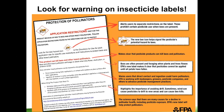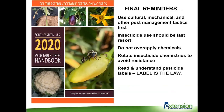Make sure you look for warning language on insecticide labels — for example, look for the pollinator protection mark on certain insecticides and follow those recommendations. Finally, make sure you're integrating cultural, mechanical, and other pest management tactics first before using chemicals. Use insecticides as a last resort, not the first resort. Think broadly about why insect outbreaks are happening and do not over-apply insecticides. Rotation is very important. Please contact your extension agent and develop a well-written IPM plan that is unique to your farm. Read and understand the pesticide label, because the label is the law. Thank you very much.